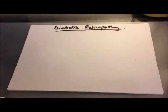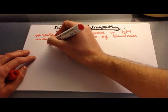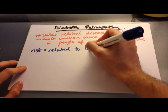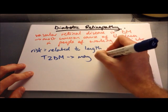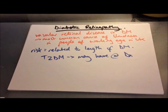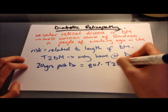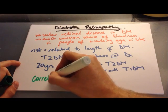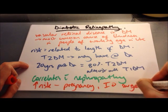Next, diabetic retinopathy — a vascular disease of the retina in patients with diabetes and the most common cause of blindness in people of working age in the UK. The risk is related to the length of time having diabetes. Type 2 diabetes is insidious, so patients may already have retinopathy at diagnosis. At 20 years after diagnosis, 80% of those with type 2 diabetes have retinopathy and nearly all with type 1 show some signs. Nephropathy and retinopathy correlate closely, and pregnancy and intraocular surgery increase the risk of progression.